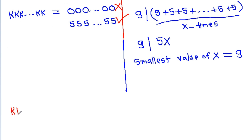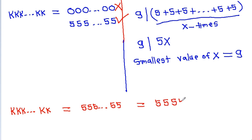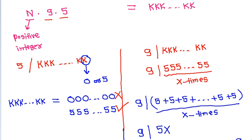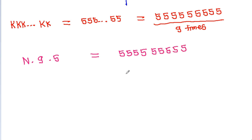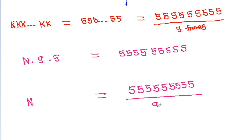So the repdigit number k, k, k, ... is equal to 555555555 — that is, five repeated 9 times. We have n times 9 times 5 equal to 555555555.